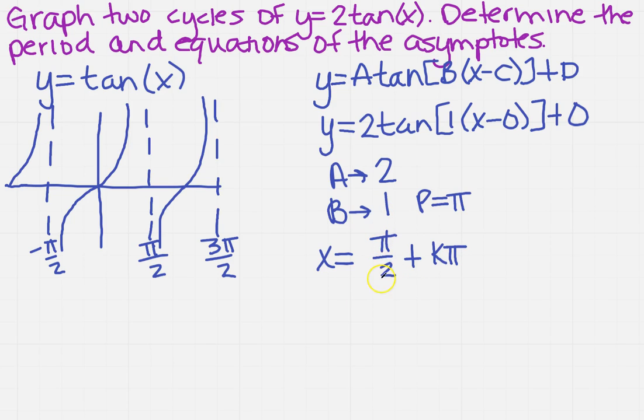So that means that if it's going to be at pi over 2, so let's say that k is 0, then it's at pi over 2 is where I'm going to have one. So look, those are the same ones that I had originally.